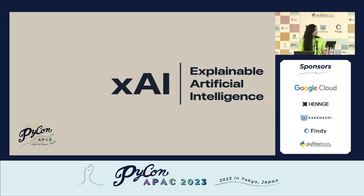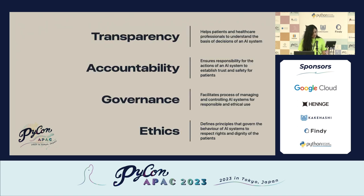Explainable artificial intelligence plays a very strong role in designing healthcare solutions. Explainable AI addresses very crucial aspects relevant to healthcare, such as transparency, accountability, governance, and ethics.